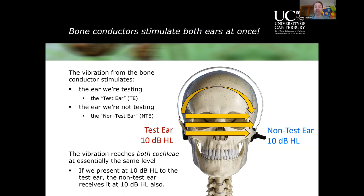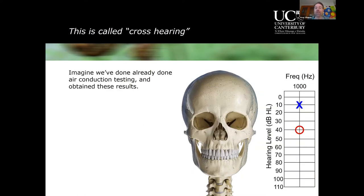So if I put a bone conductor on you and play a sound at 10 dB HL to the test ear, I'm also stimulating the non-test ear at 10 dB HL. That's ambiguity — we call it cross hearing. For example, if we've already done air conduction results and found the right ear threshold at 40 dB HL (red circle) and the left ear at 10 dB HL (blue cross), and now we do bone conduction...